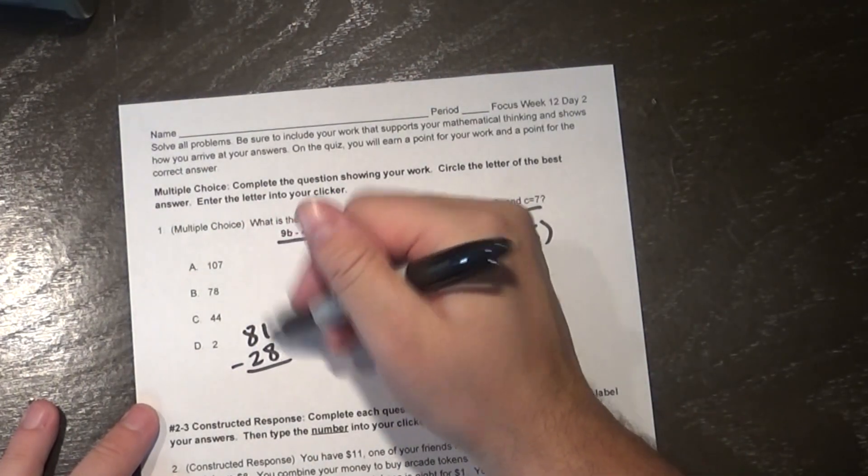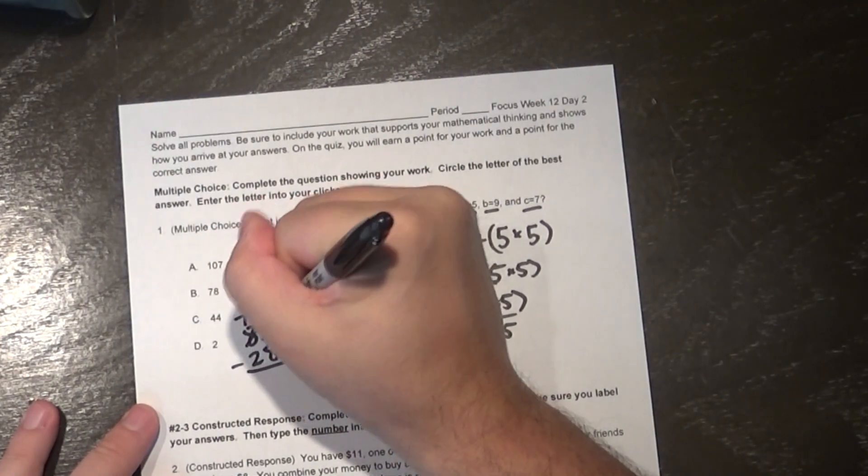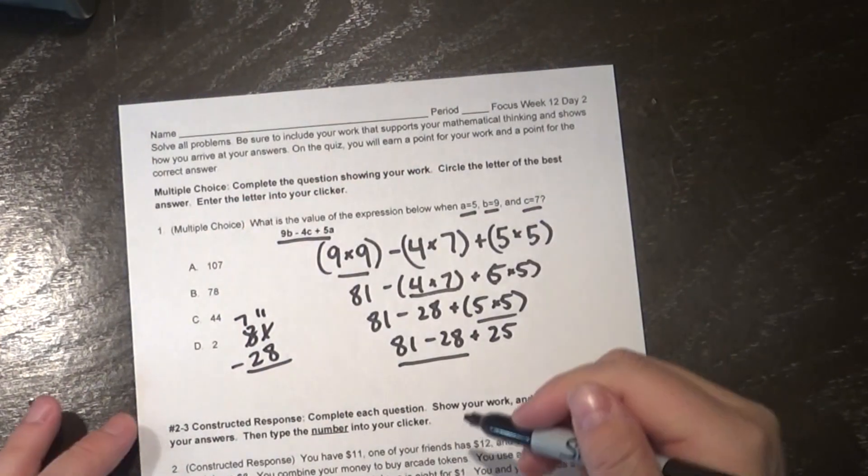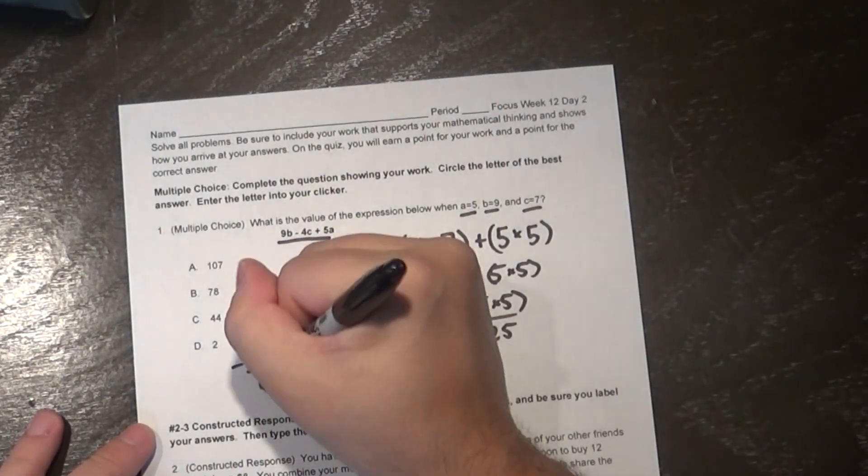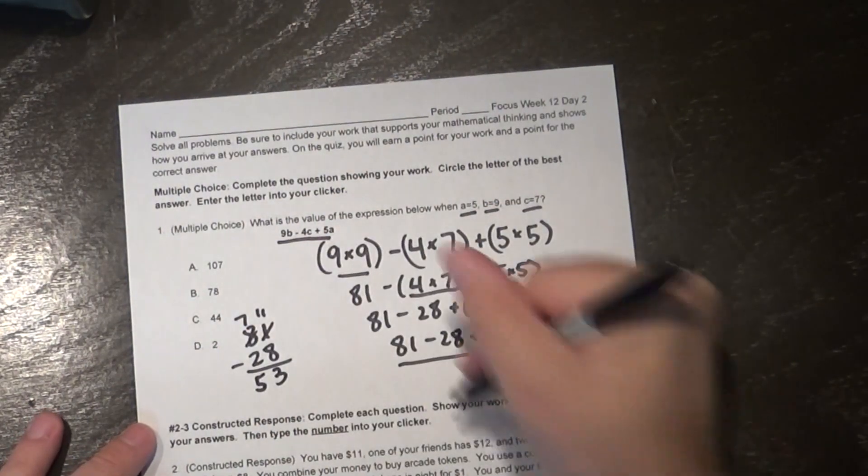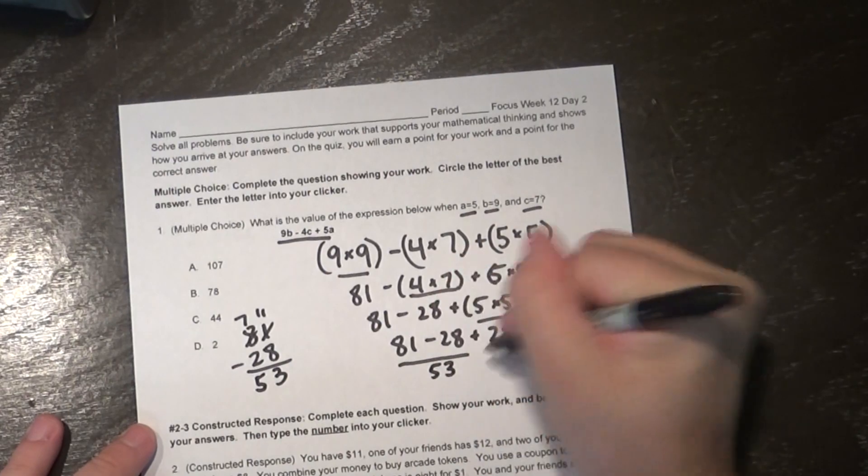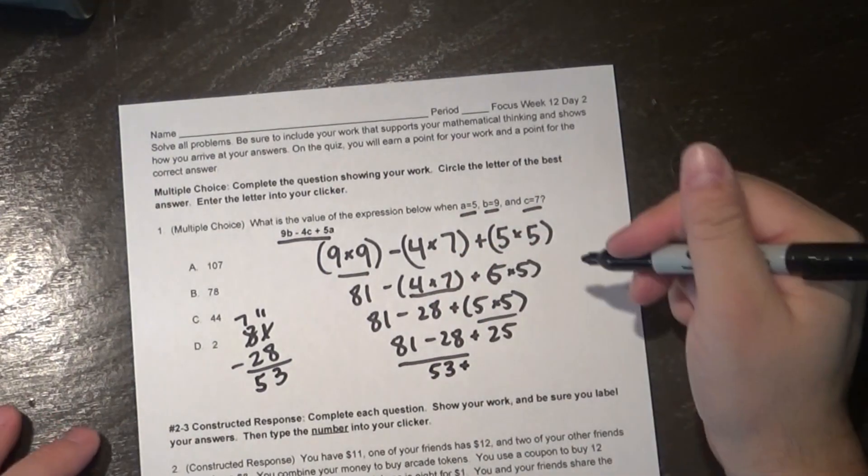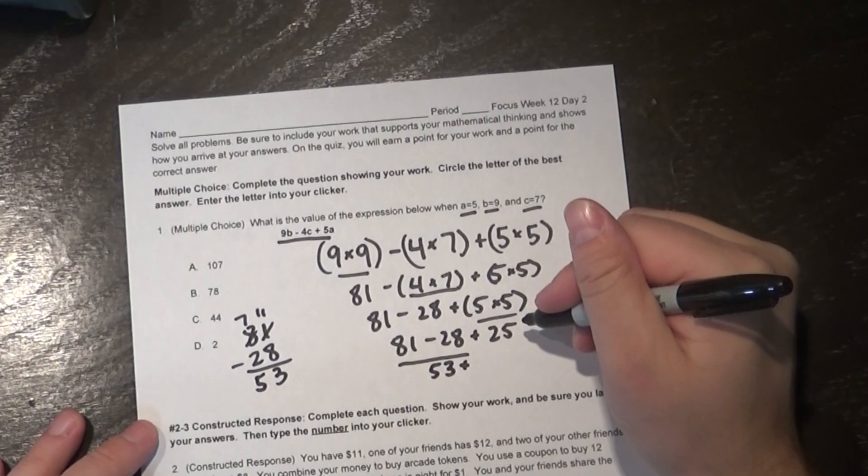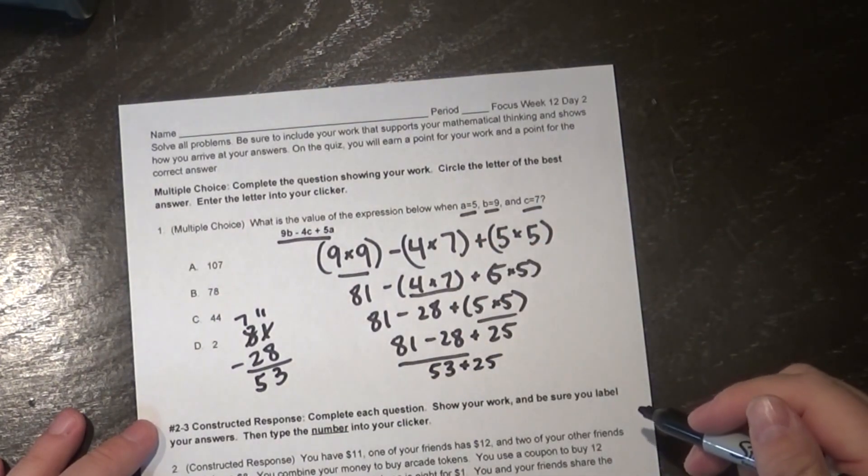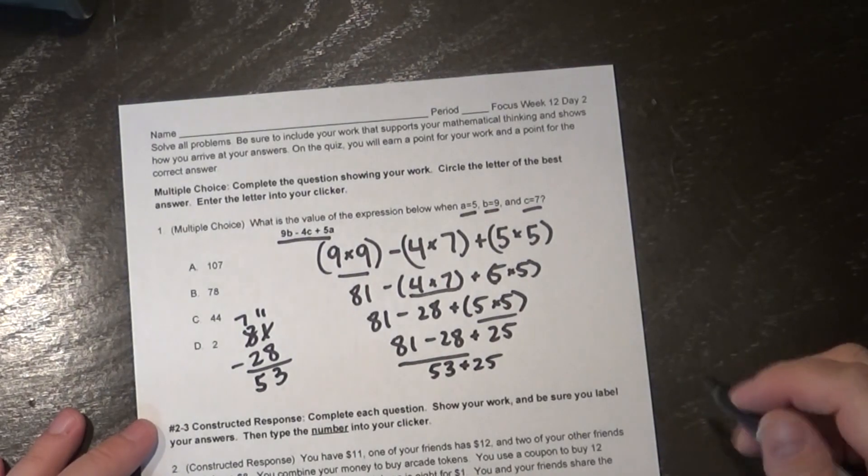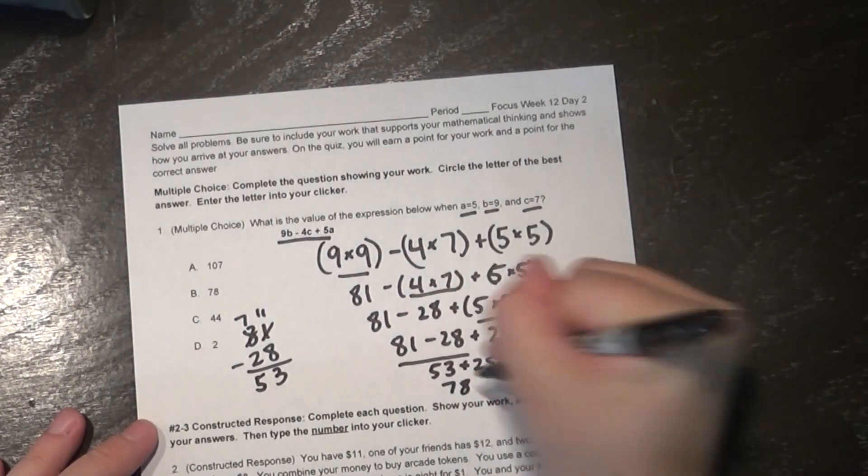Alright so I have 1 minus 8, I can't do it. I have to borrow. This 1 becomes an 11. Now I'm looking at 11 minus 8, well that's much easier for me. And then 7 minus 2. Hey look at me, I figured out that it's 53. I just made a rhyme. I'm doing it all the time. I'm not sure how it happens, but I'm just going to let it.